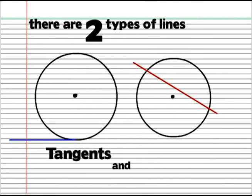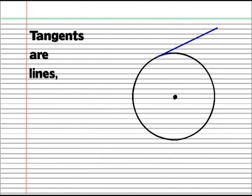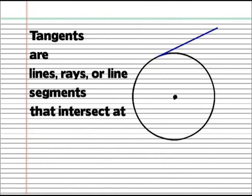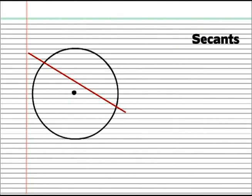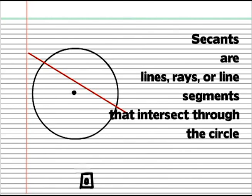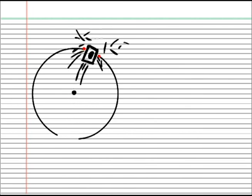Tangents and secants. Tangents are lines, rays, or line segments that intersect at only one point of a circle, like a driver facing the side of a large column. Secants are lines, rays, or line segments that intersect through the circle at two points, like a drunk driver driving through a large column.